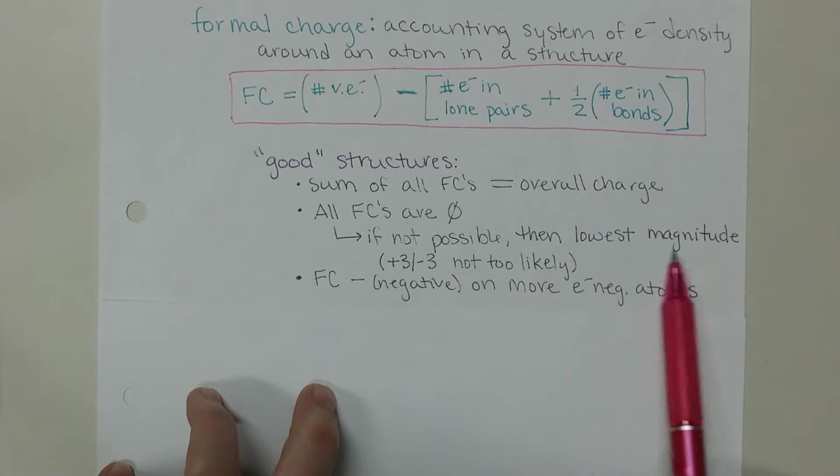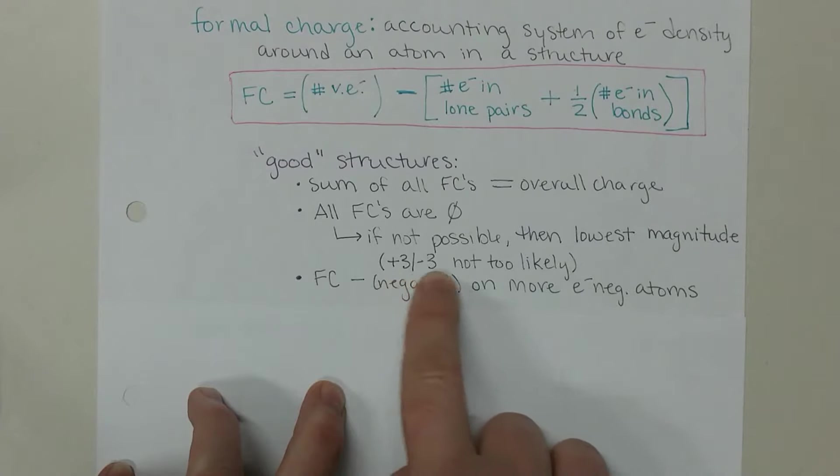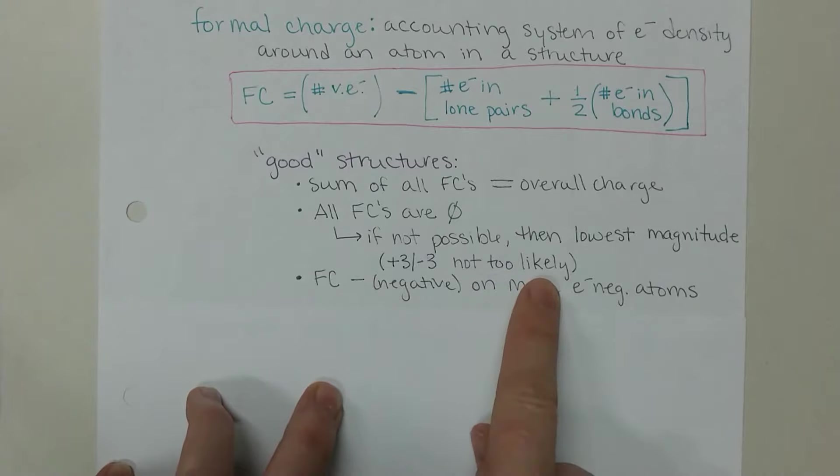If this is not possible, which a lot of times it's not, then we want the lowest magnitude of that formal charge. So plus 1, plus 2, negative 1, negative 2, those formal charges are common. When we start to get up into plus 3, minus 3, or greater - plus 4, plus 5, negative 4, negative 5 - those aren't very likely. They can happen, but usually there are other Lewis structures we can consider where we can minimize those large formal charges.